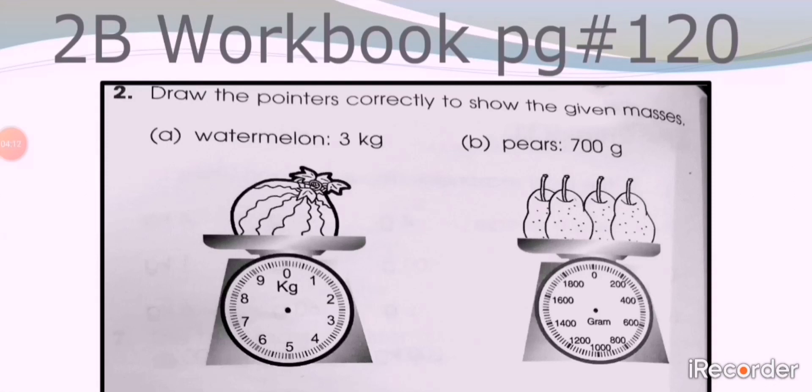Part B: pears, 700 grams. Pears are placed on the gram scale. You can see the gram scale has equal markings and between two numbers there is a space of 200 grams. It means each marking contains 200 grams. So find where is 700 and draw the pointer.